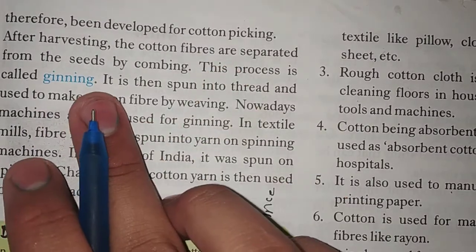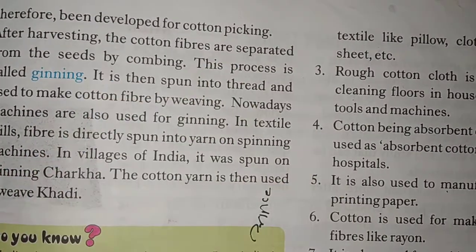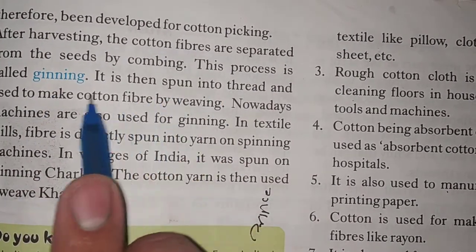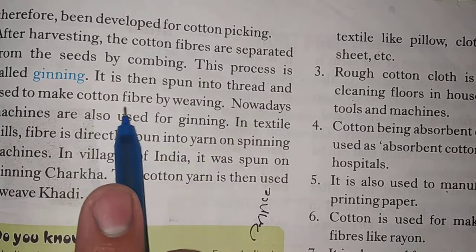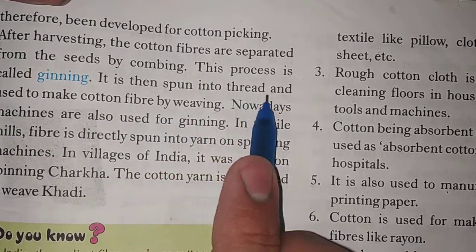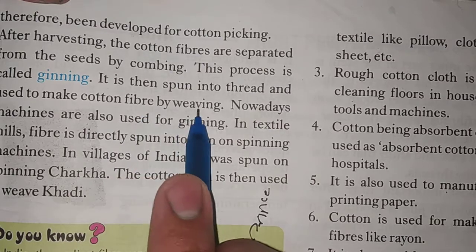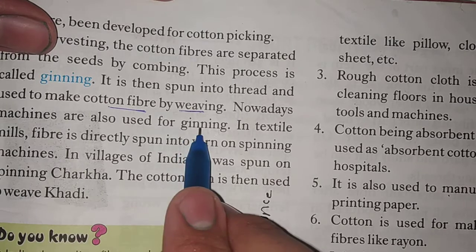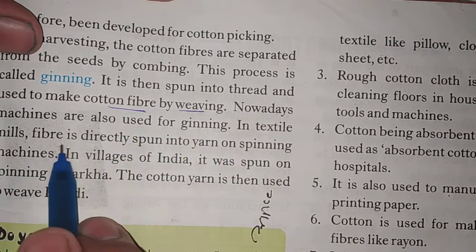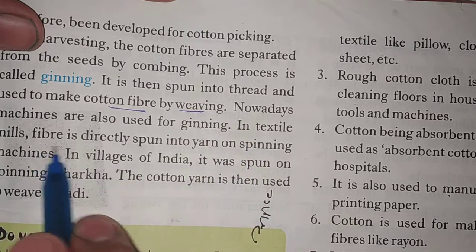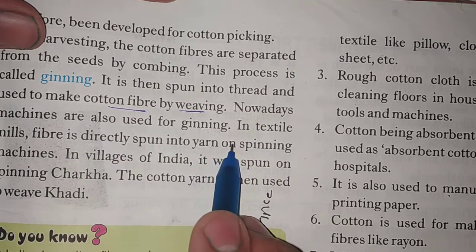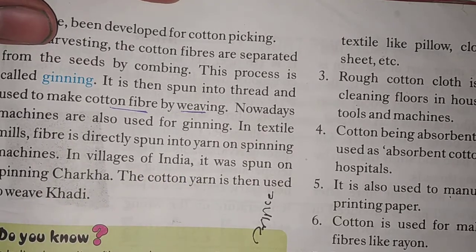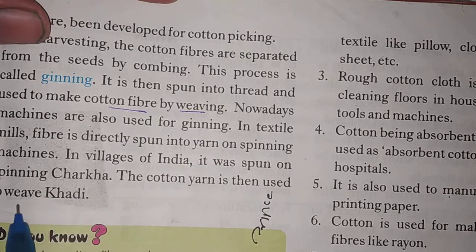After harvesting, the cotton fibers are separated by combing and then spun into threads. It is then used to make cotton fabric by weaving. Nowadays machines are used for ginning, and in textiles the fiber is directly spun into yarn in a spinning machine. In villages of India it was spun on a charkha, and the cotton yarn is then used to make khadi.